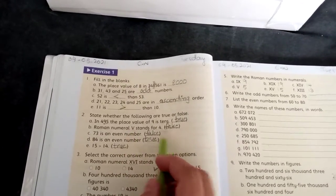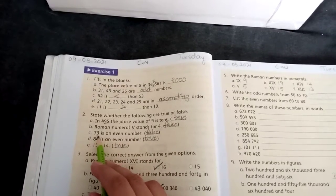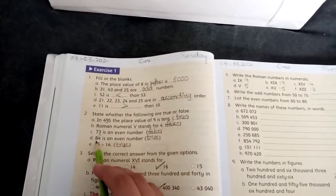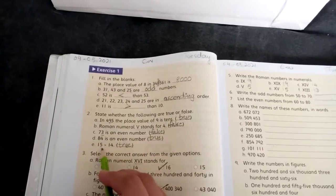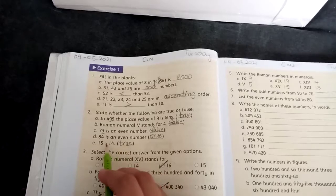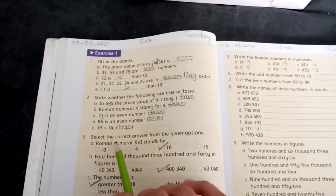73 is an even number. 73 even number hai? No, it's odd. 3 pe end ho raha hai, odd hai, wrong. 84 is an even number. 84 even hai, yes it is even, true. 15 is greater than 14. Yes, it is true.